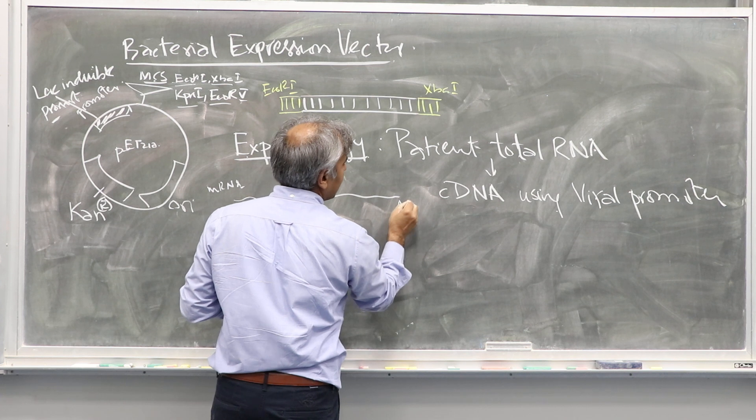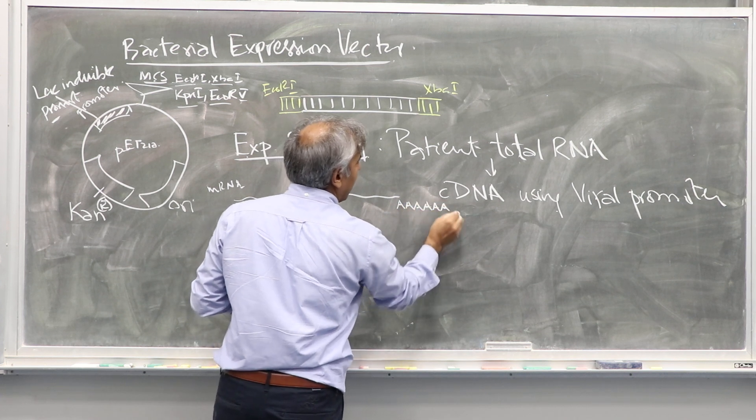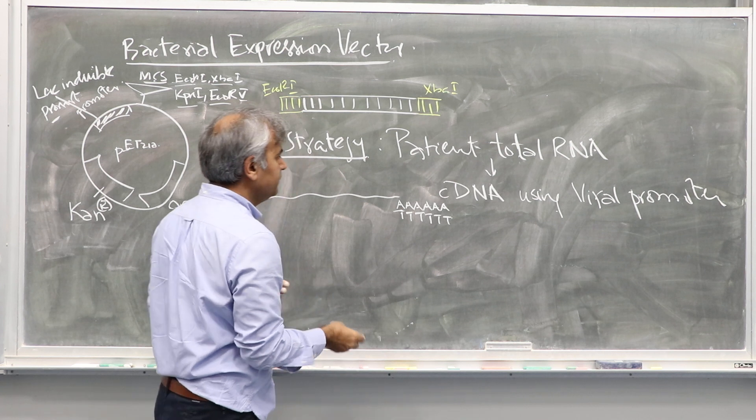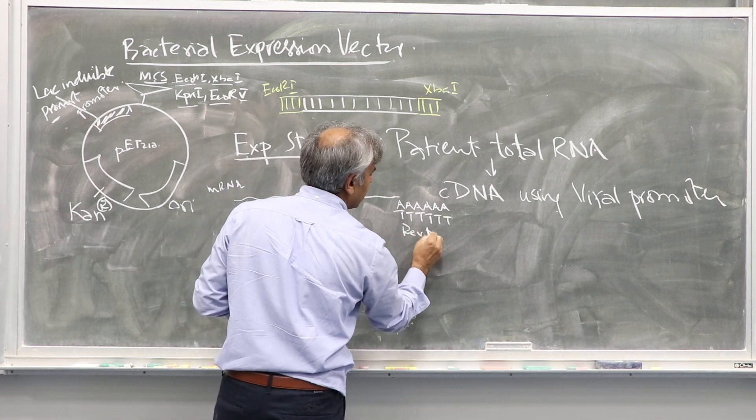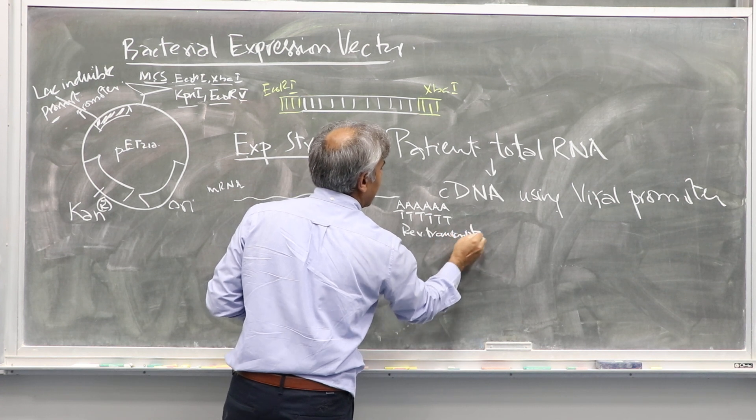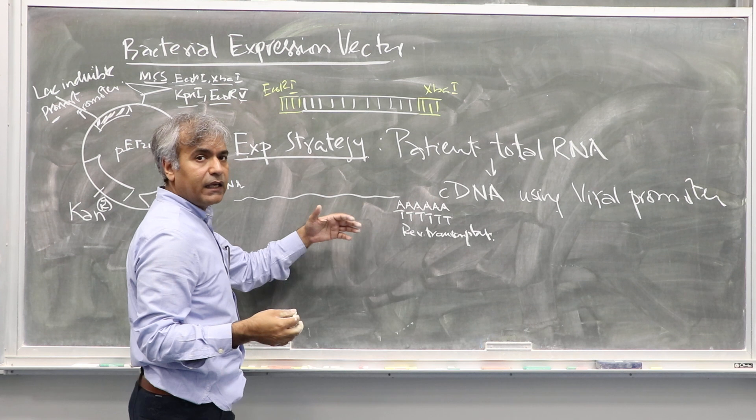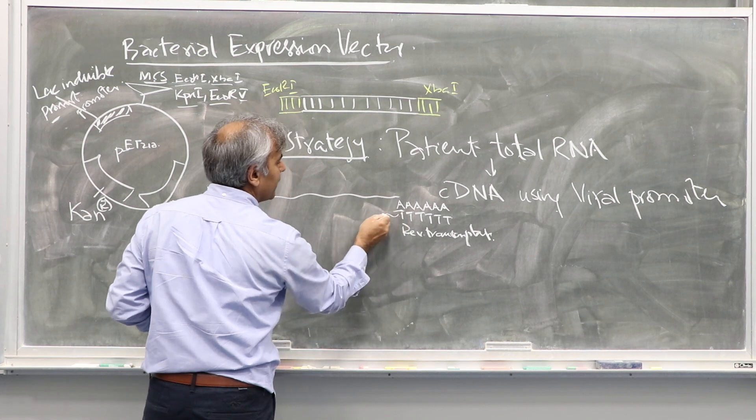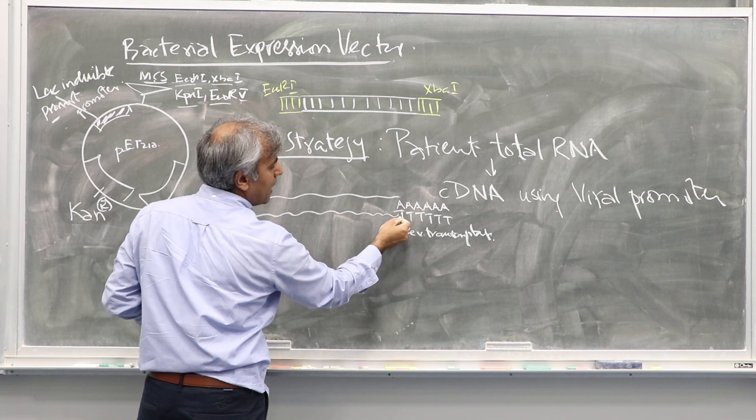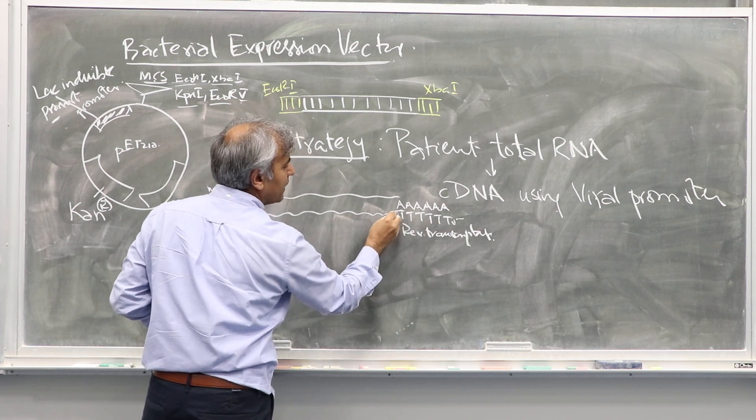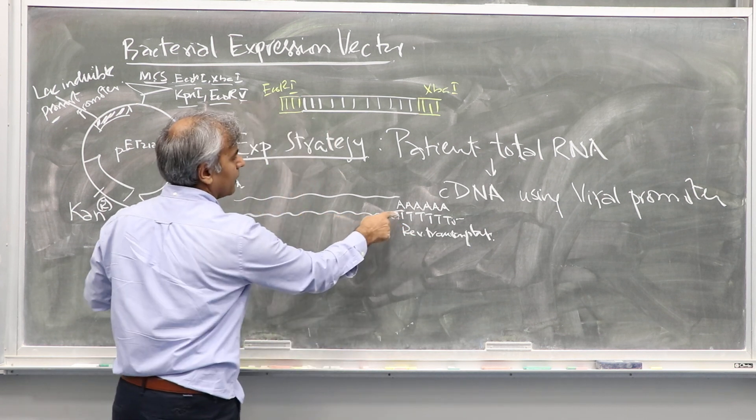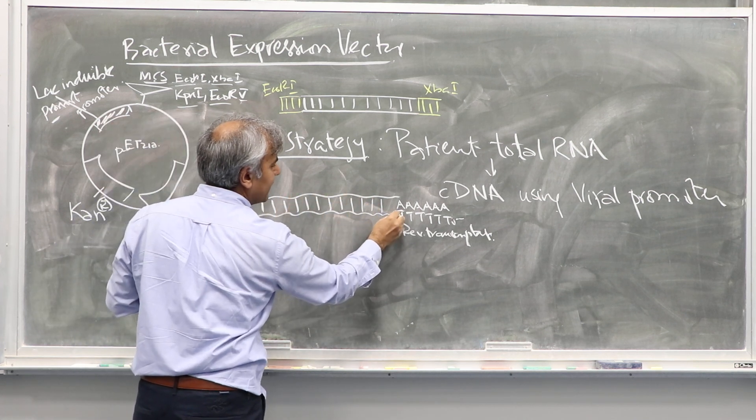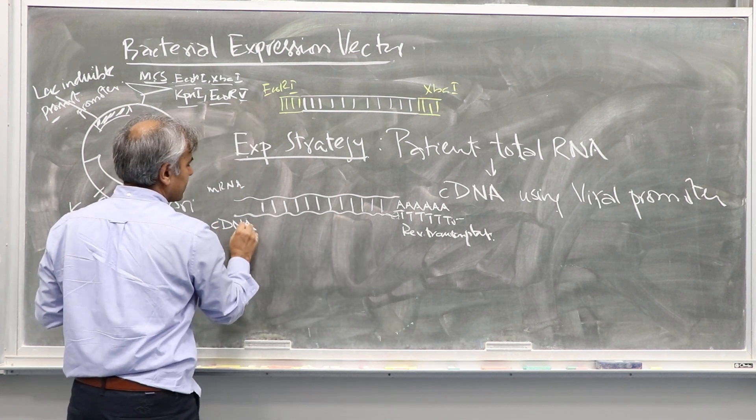If you use oligo-dT primer and then add reverse transcriptase - an enzyme that makes DNA using RNA as a template - this will copy messenger RNA because this is now 5' to 3', 3' prime hydroxyl, and the elongation of this primer will make copies of this messenger RNA. So this is called cDNA, copy DNA.